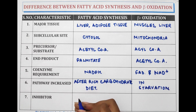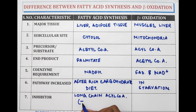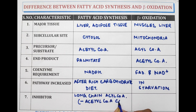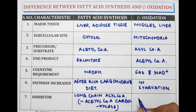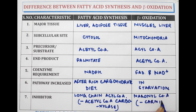In the case of beta oxidation, the pathway is increased during starvation. The inhibitor for fatty acid synthesis is long-chain acyl coenzyme A, which inhibits acetyl coenzyme A carboxylase. The inhibitor for beta oxidation is malonyl coenzyme A.